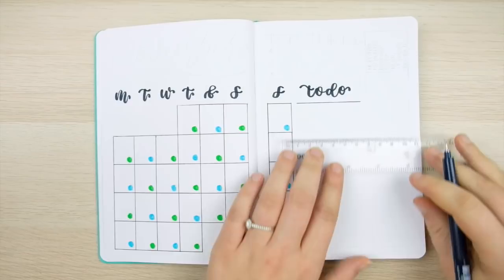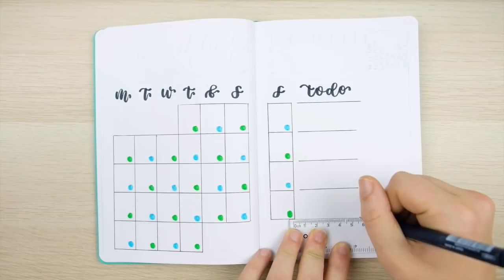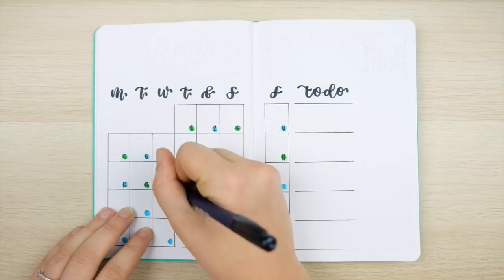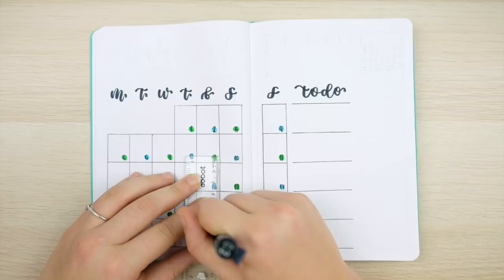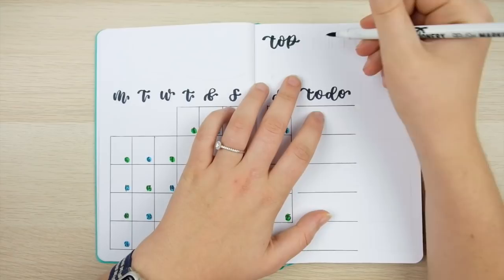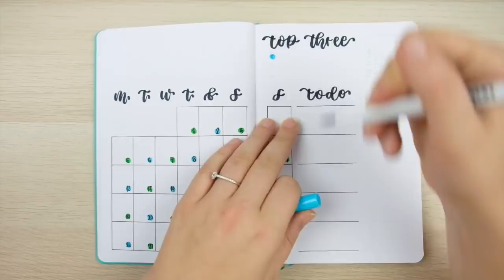This is a good spot to write down general tasks for each week that don't necessarily correspond to a specific day and having this separated by week is an easy way to keep your list more organized and easier to complete. Above that I'm going to make a spot for jotting down my top three goals or tasks for the month. Think of these as your main monthly priorities.